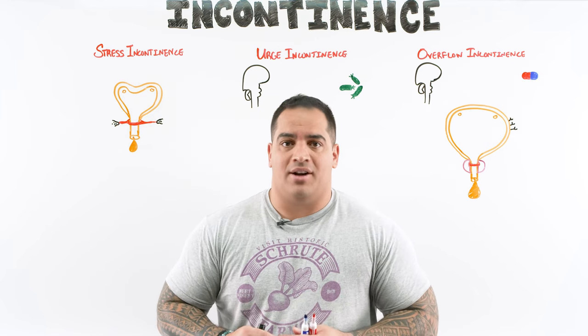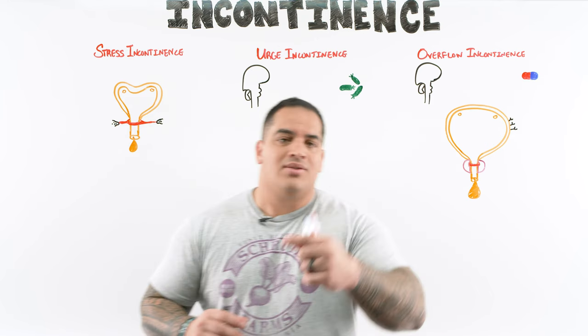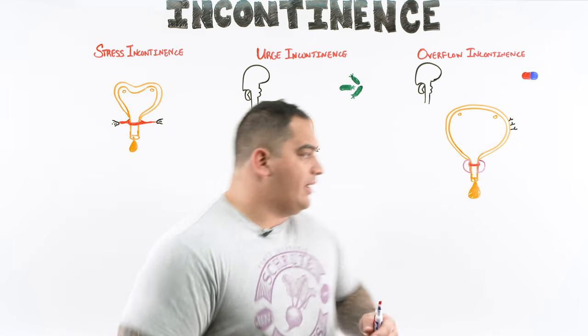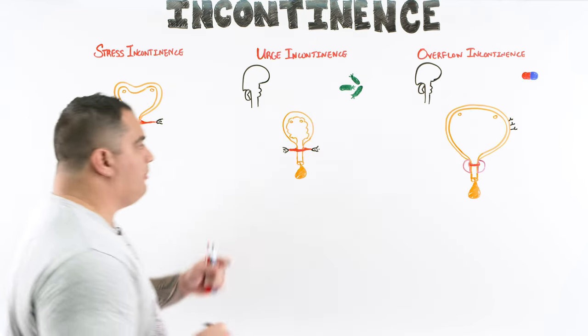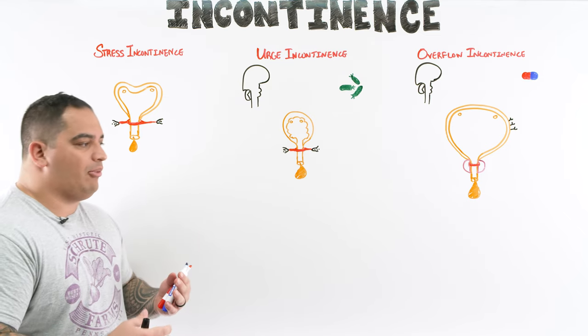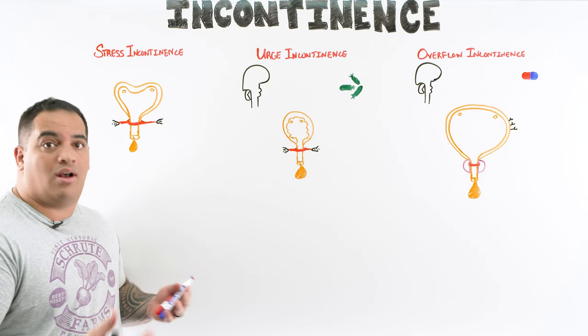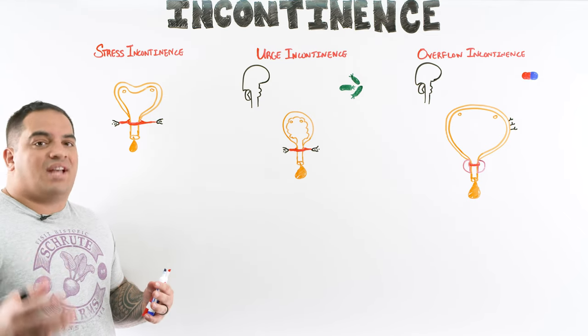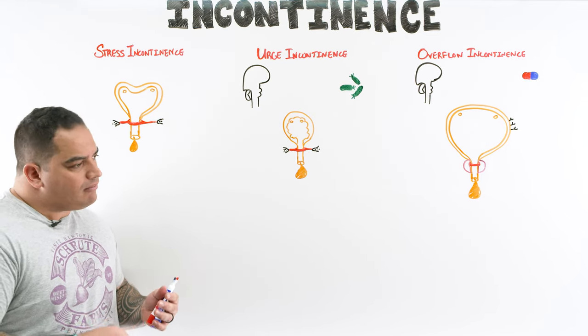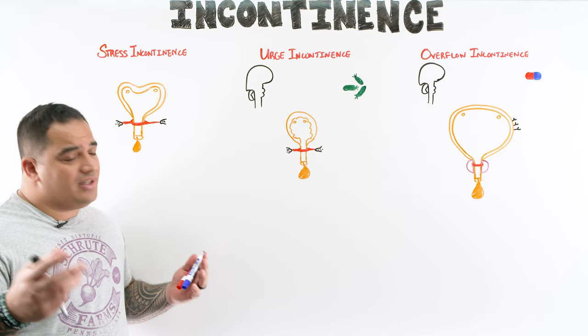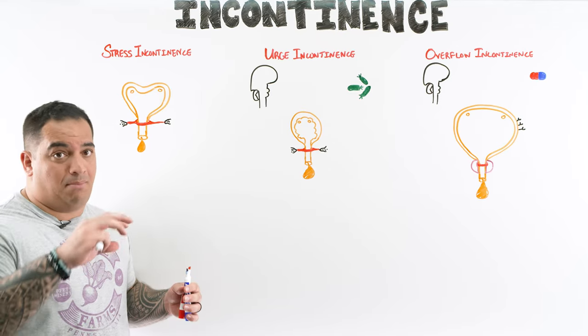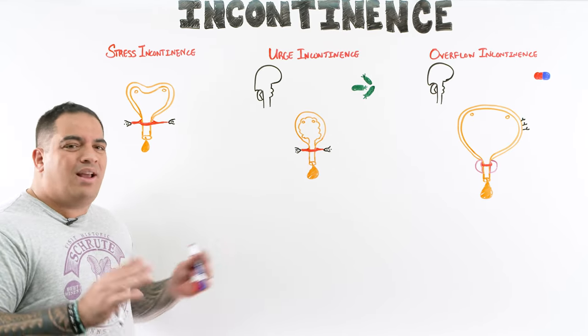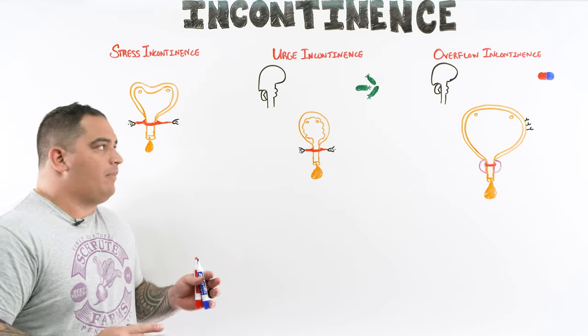Urinary incontinence is whenever a patient is having an undesirable, involuntary loss of urine. There are three main types we'll discuss — technically four if you include mixed, but we'll focus on stress, urge, and overflow incontinence.